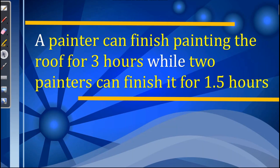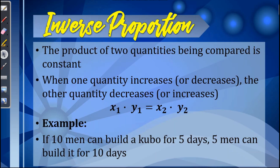Next proportion. A painter can finish painting the roof in three hours, while two painters can finish it in 1.5 hours. This is an example of inverse proportion. When we say inverse proportion, the product of two quantities being compared is constant — when one quantity increases, the other decreases, or vice versa. To solve this, we multiply the values of the first ratio and equate them to the product of the second ratio. Another example: if 10 men can build a kubo in 5 days, 5 men can build it in 10 days. The more workers, the lesser the time it takes to finish a job.